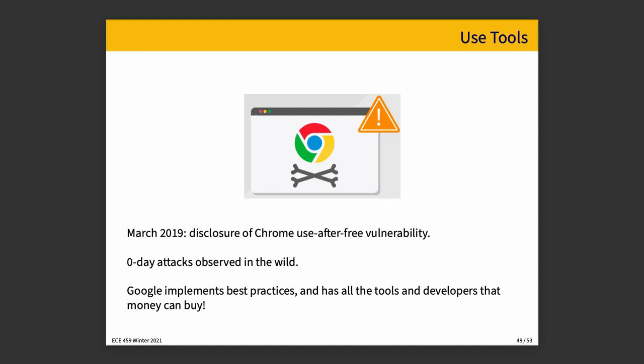Zero-day goes back to the history of vulnerabilities. It used to be the case that somebody would release a patch fixing a vulnerability in program ABC, and then bad actors would try to reverse engineer from the patch what the vulnerability was. If it took them 17 days, it would be a 17-day attack. The goal in that scenario is to patch your system before the bad guys have worked out how to produce an attack. Zero-day attacks are the ones released before any such patch has been released, meaning vulnerable systems can be exploited immediately and may have been exploited for some time before the vulnerability was discovered.